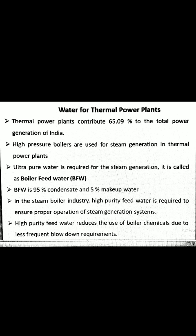Here we can see that the thermal power plants contribute 65% to the total power generation of India. High pressure boilers are used for steam generation in thermal power plants. Ultra-pure water required for steam generation is called the boiler feed water. Boiler feed water is 95% condensate and 5% makeup water.